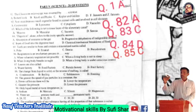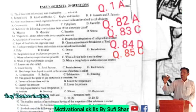Question number 1 is from the science section: where the compound microscope was invented, by which scientist? The correct answer — option A — is Robert Hooke.